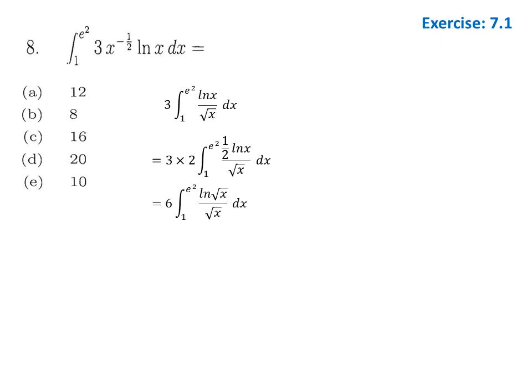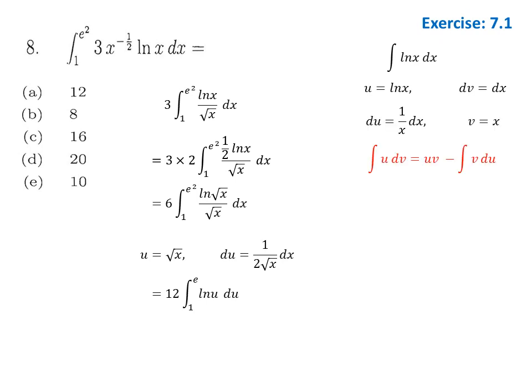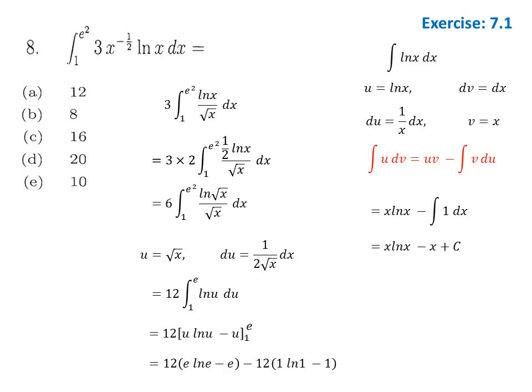With substitution u = √x, du = 1/(2√x) dx, the integral reduces to ∫ln(u) du. Solving by integration by parts with u = ln(x), dv = dx gives x·ln(x) − x. Applying the fundamental theorem from 1 to e and simplifying yields the answer 1. Option A is the answer.